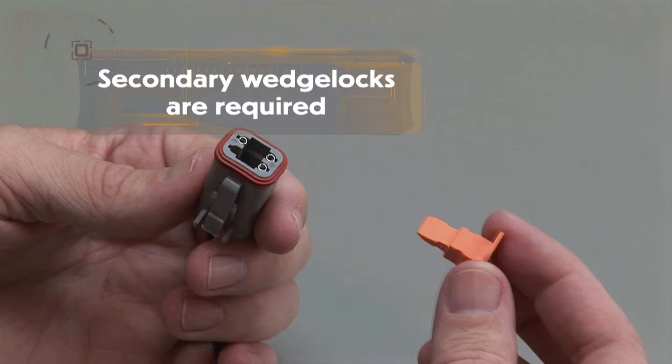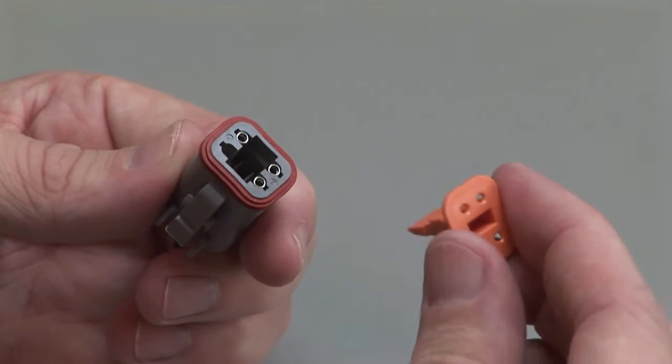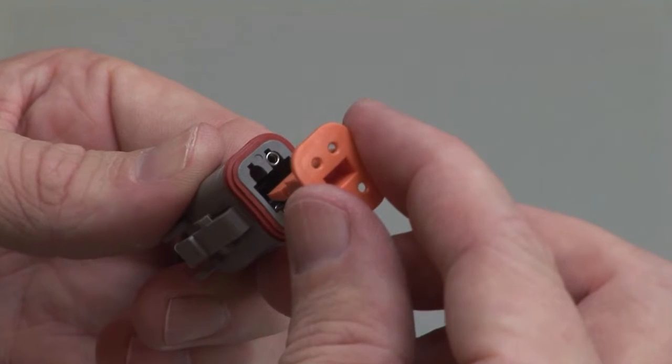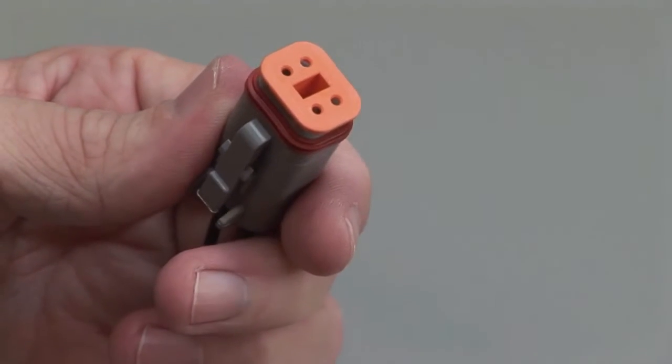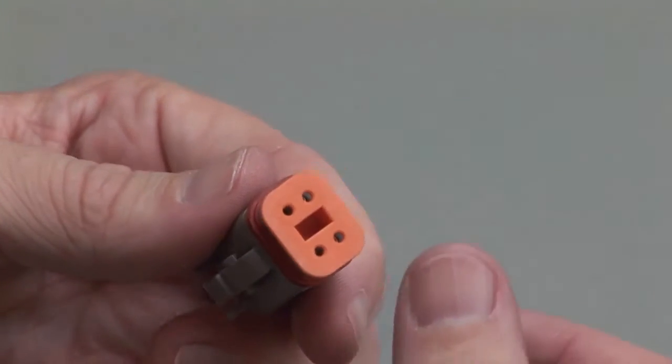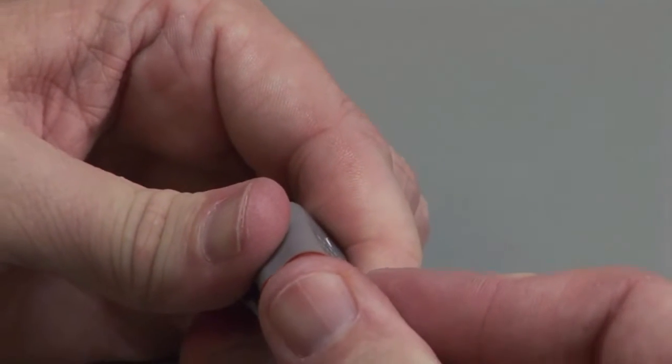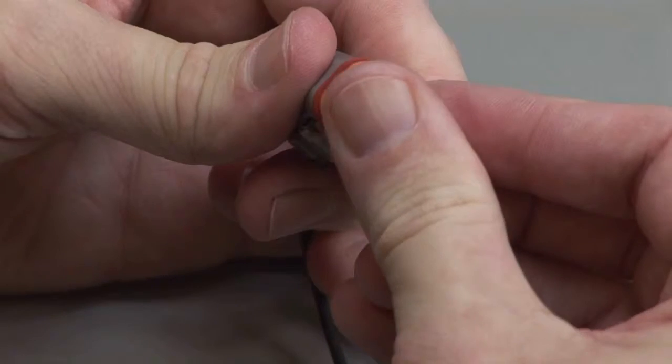To insert the wedge lock in the plug housing, select the appropriate wedge lock. Properly align with the opening in the connector interface. The open end of the socket should be slightly visible in the circular opening of the wedge lock. Apply downward pressure until a click is heard and felt.